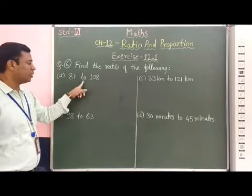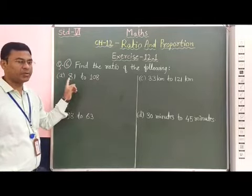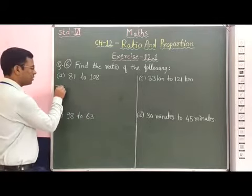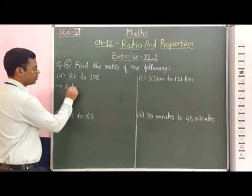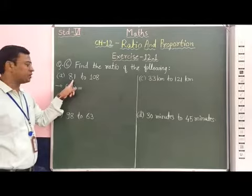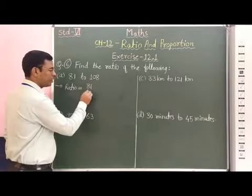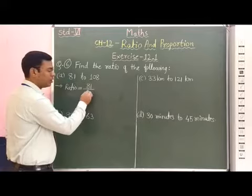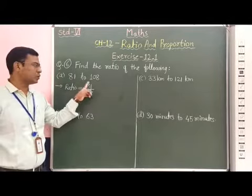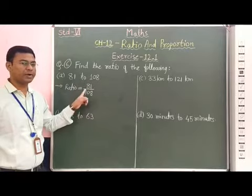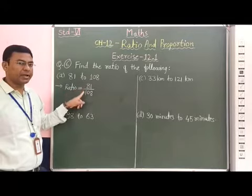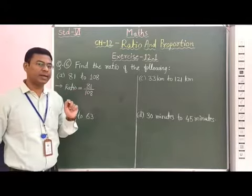First: 81 to 108. Here we have to find out the ratio of these two numbers. Therefore, we can write the ratio, which is equal to — we are going to write the first number on the numerator and the second number on the denominator. If you observe, 81 and 108 are both divisible by 9.